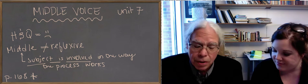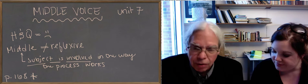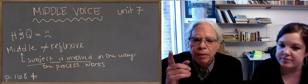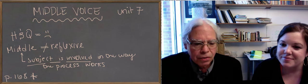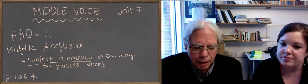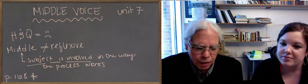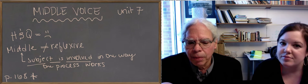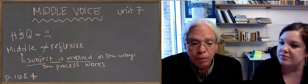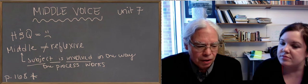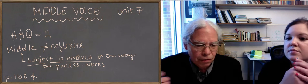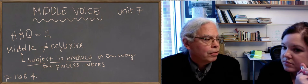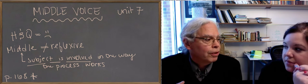There's the verb didasko, to teach, and in the middle it means to have somebody taught for you. This is the example in the Sanskrit grammarians. The Sanskrit grammarians terminology isn't active in the middle, it's atmanepadam and parasmaipadam, a word for another and a word for oneself. And so their example there is the verb yajati, which is the verb that means sacrifice. In the active, that's yajati, it's when you sacrifice for somebody else. In the middle, yajati, it means to sacrifice for yourself, to perform the ritual for yourself.